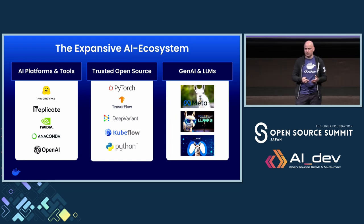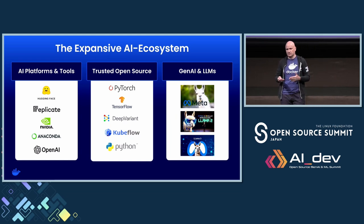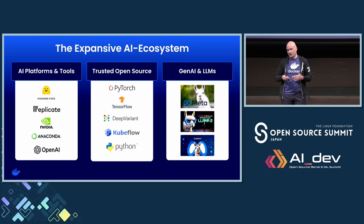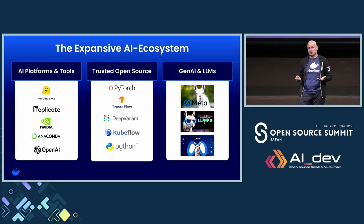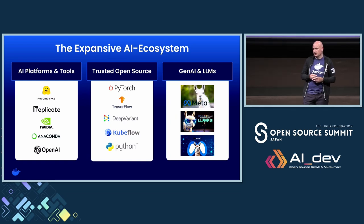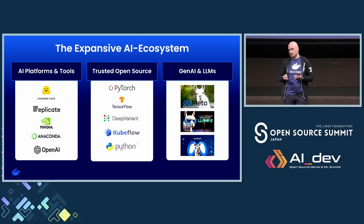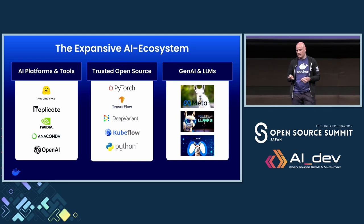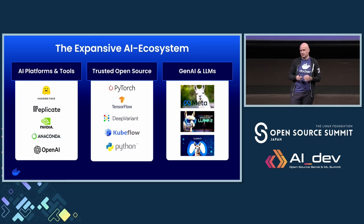On the other side, we have trusted open source projects — frameworks and libraries that are available to anyone for free. They are really guiding and leading the development and research in the ecosystem. And in the third category, we have Gen AI and large language models. Every day we see new large language models coming up. One good example is Meta's Llama models, which are really driving new capabilities of large language models that we can use in our applications.